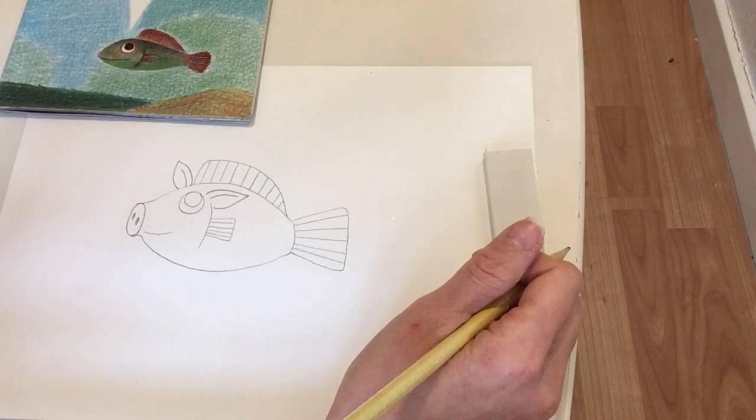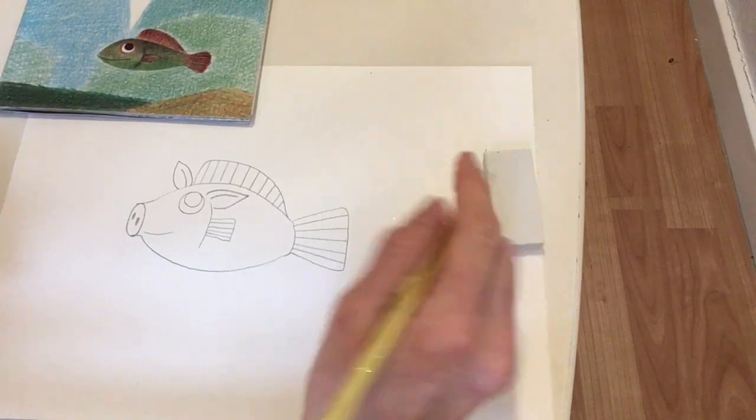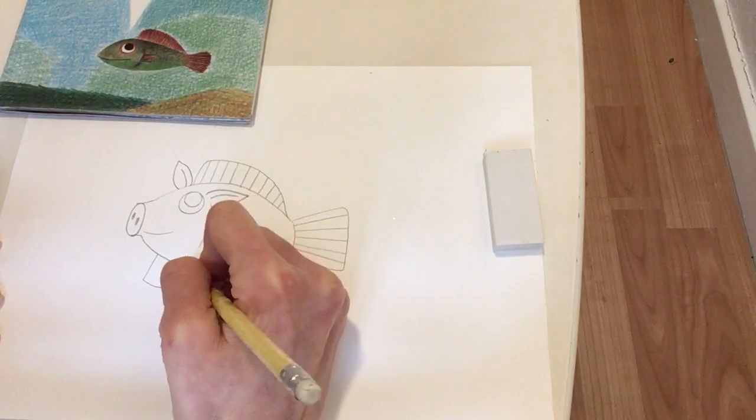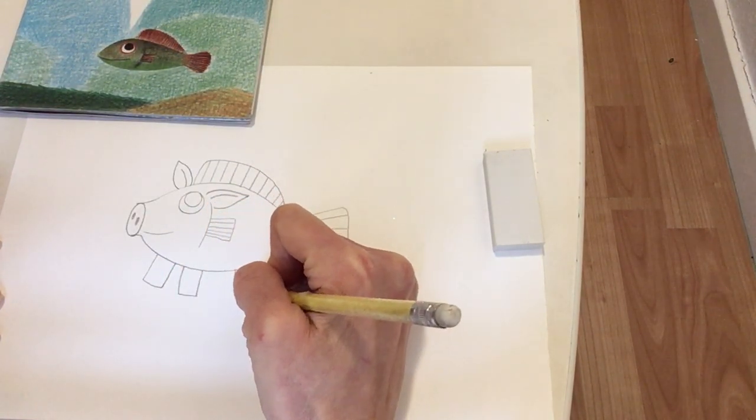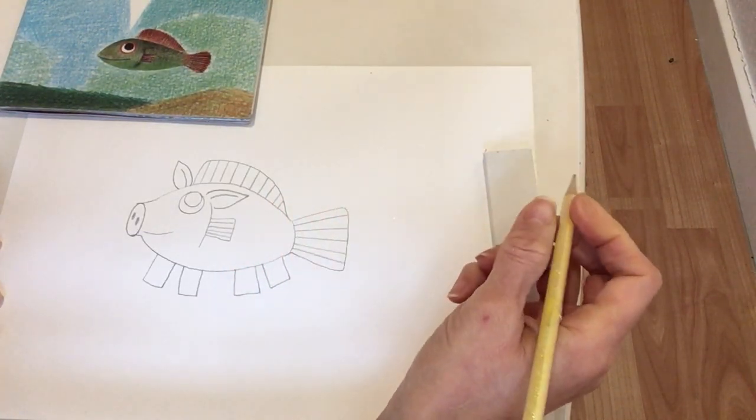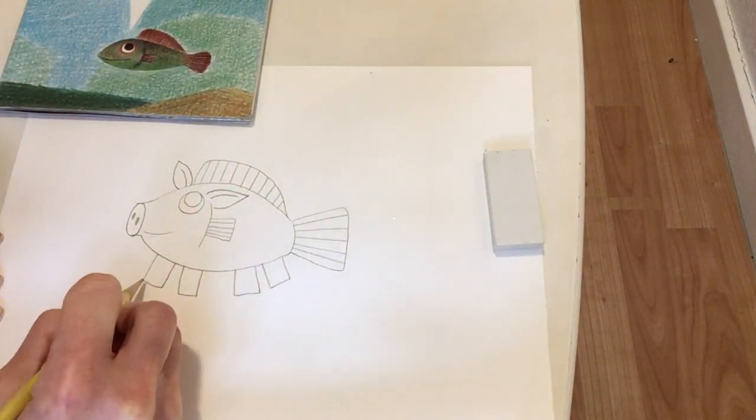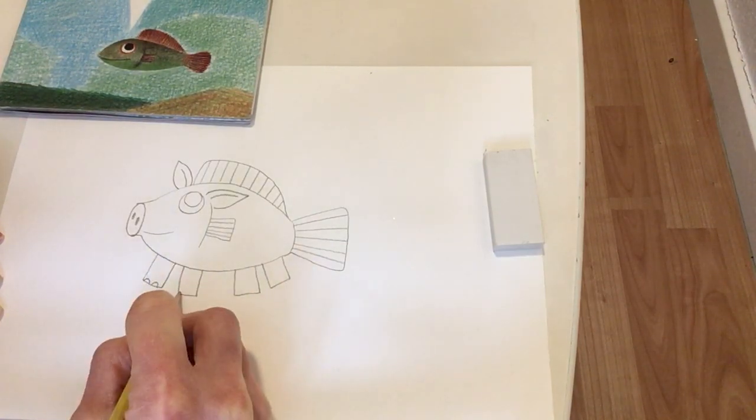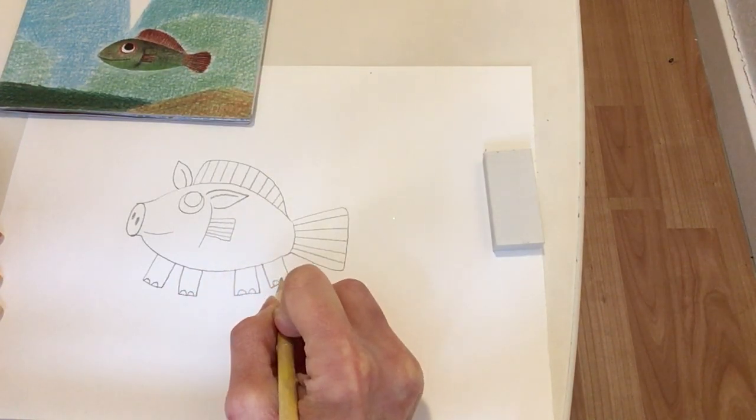Now what else does a pig need? He needs four legs. Do fish have legs? No, but this is a pig fish. So we're going to do one, two, three, four pig feet. Now I'm going to give them some little like toenails on their hooves. So I'm going to do like this one, two, one, two, one, two, and one, two.